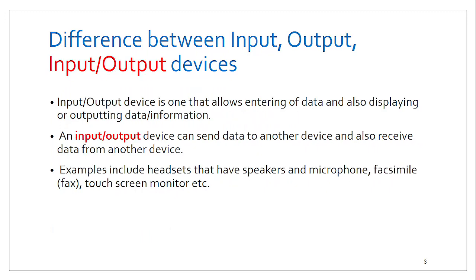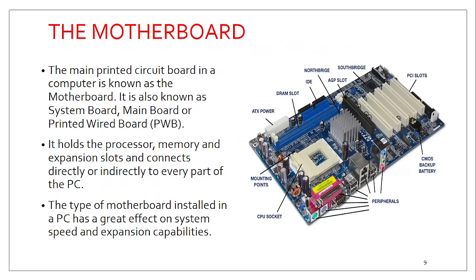Some parts of the computer — input and output devices — have the capability of sending and receiving signals from the CPU at the same time. They can send data and at the same time receive data from other devices. Examples include the touchscreen on your smartphone, FaxMile, and headsets that have both speakers and a microphone. So we can organize computer components into input devices, output devices, and storage devices.